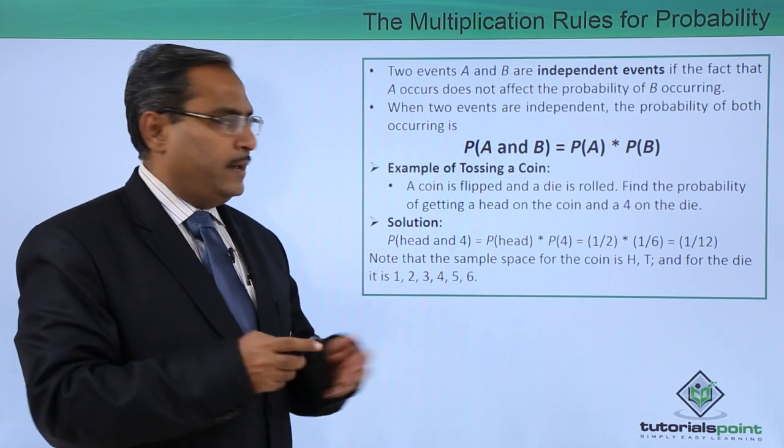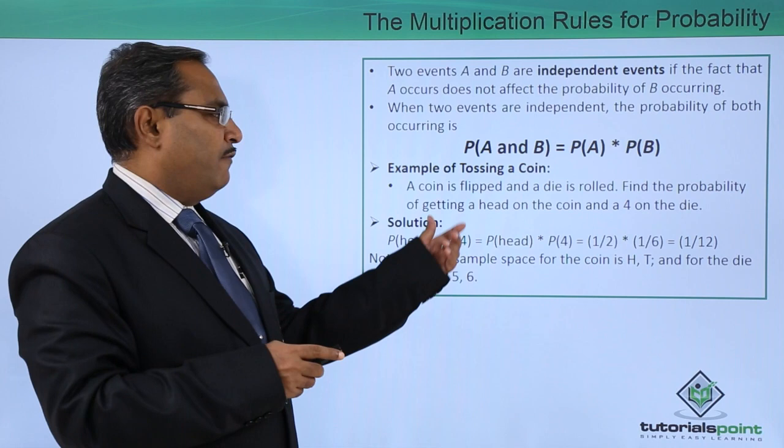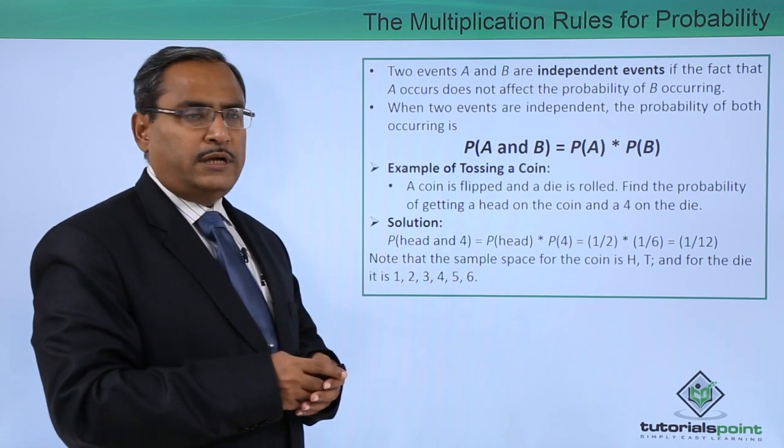There is no dependency between them. Find the probability of getting a head on the coin and 4 on the die.